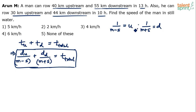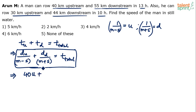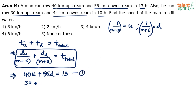So u is the reciprocal of upstream speed and d is the reciprocal of downstream speed. Substituting into case one: 40 km upstream gives 40u, and 55 km downstream gives 55d, so 40u + 55d = 13. That's equation 1. In case two: 30 km upstream and 44 km downstream gives 30u + 44d = 10. That's equation 2.